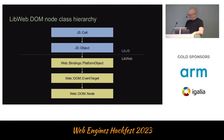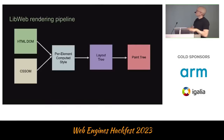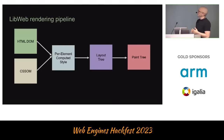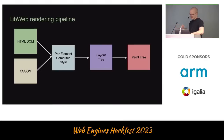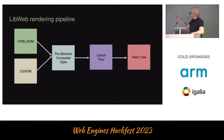Our very high-level rendering pipeline: we combine the HTML DOM and the CSS OM into per-element computed style, then build a layout tree — or box tree as the CSS specs call it — and we run layout algorithms on it, which produces a paint tree. The paint tree is what we draw into a bitmap or a window. The final state is a tree with absolute coordinates for everything, ready for painting and hit testing.